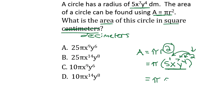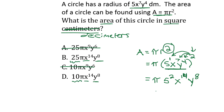This gives us pi times 5 to the 1 times 2, or 5 squared; x to the 7 times 2, or x to the 14th; and y to the 4 times 2, or y to the 8th. Looking at the answer choices, we need pi times 5 squared, x to the 14th, y to the 8th. Since 5 squared is 25, the answer is 25 pi x to the 14th y to the 8th, which is answer choice B.